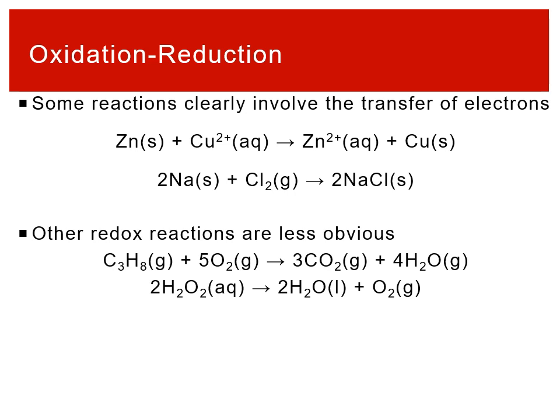Sometimes electron transfer is clear in reactions, such as when things become ions. For example, zinc starts neutral and becomes a cation, so it lost electrons. Copper goes from cation to neutral, so it gained electrons. In sodium reacting with chlorine to make sodium chloride, an ionic compound forms, so electron transfer occurred.